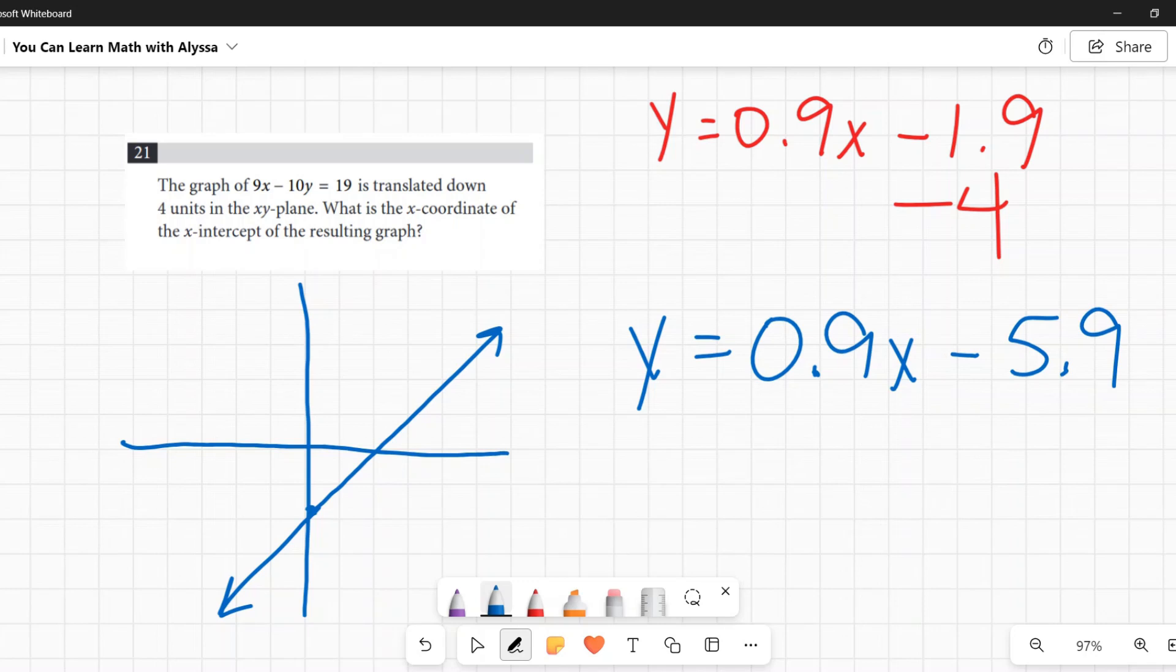Now, it says, what is the x-coordinate of the x-intercept of the resulting graph? This first line doesn't matter anymore. This is the only line that counts, and they're wanting to know what's the x-intercept. The x-intercept is where it crosses the x-axis. What is the thing that all points on the x-axis have in common? It's that all of them, their y-coordinate is zero. So the way you find the x-intercept is you plug in zero for y.